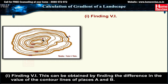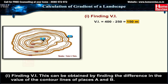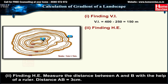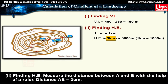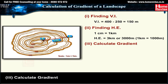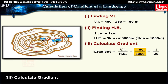First, find the vertical interval (VI): this is obtained by finding the difference in contour values at points A and B. VI = 400 − 250 = 150 meters. Second, find the horizontal equivalent (HE): measure the distance between A and B with a ruler. Distance AB = 3 cm; according to the scale, 1 cm = 1 km, so HE = 3 km = 3,000 meters. Third, calculate gradient: Gradient = VI ÷ HE = 150 ÷ 3,000 = 1:20. Thus the gradient between A and B is 1:20.